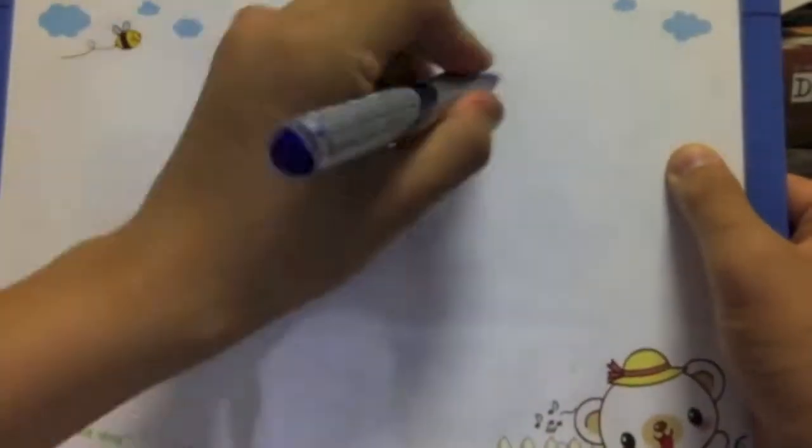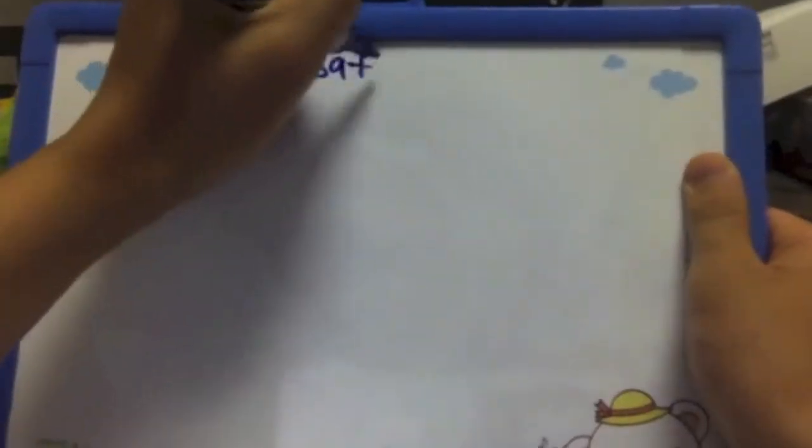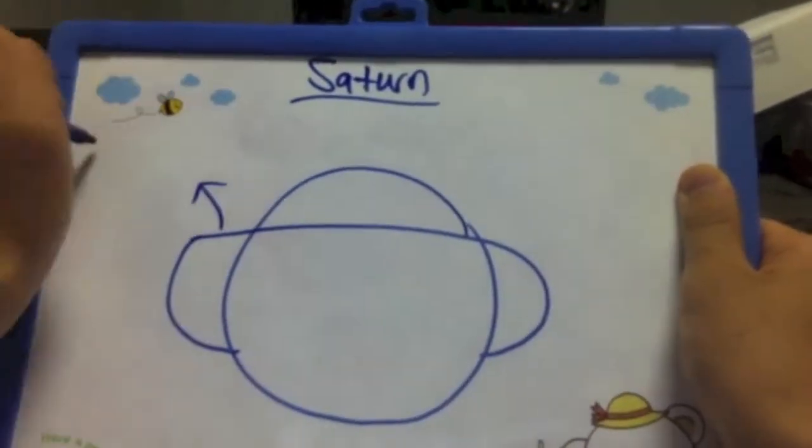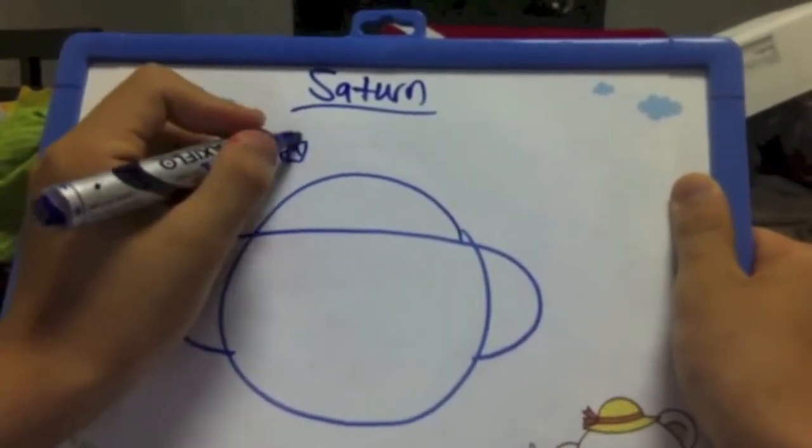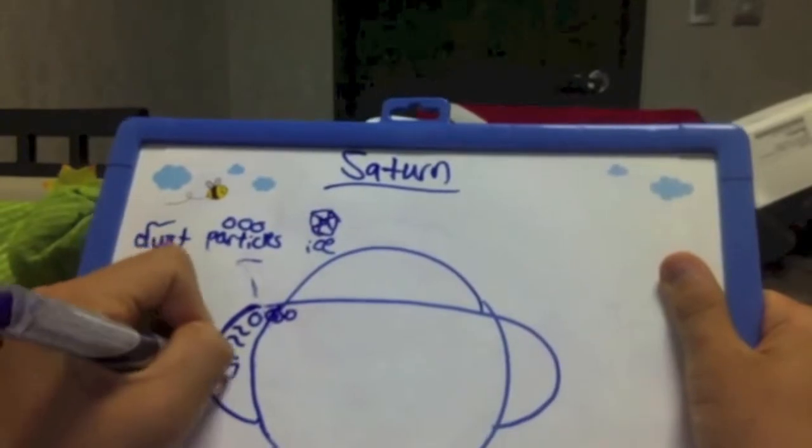To be more specific, let's talk about Saturn. Like other big gas giants, Saturn's rings are made out of dust, particles, and ice, and these materials are most likely to be trapped by their gravity.